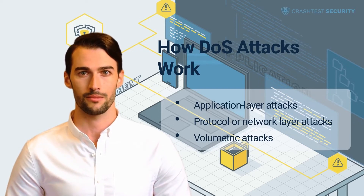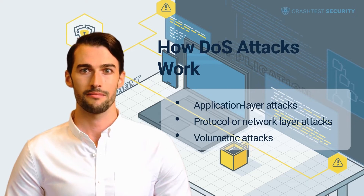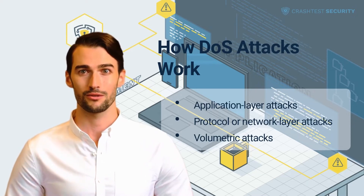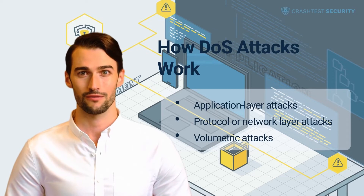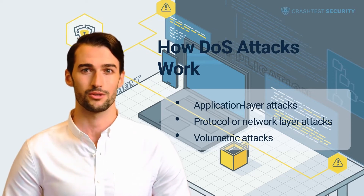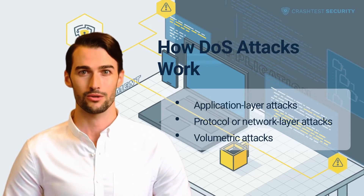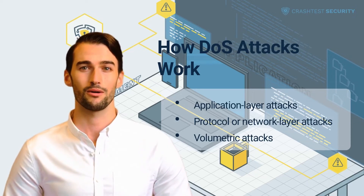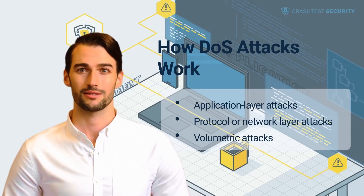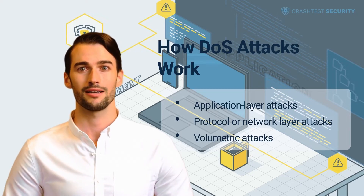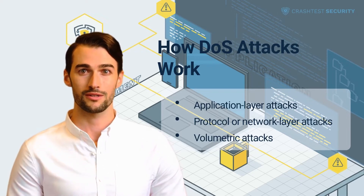For example, one way of doing this is by sending many requests with fabricated return addresses to a server. This makes it impossible for the server to verify their source, and it can lead to a server simply exhausting its RAM or CPU capacity and crashing. A multitude of different DDoS attacks exists. Depending on the attack vector, DDoS attacks either seek to flood or crash a system.